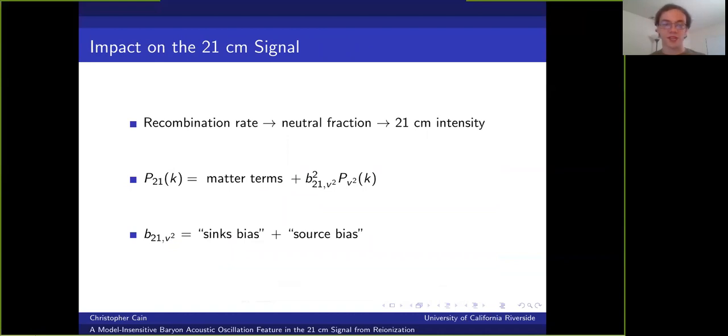On large scales it turns out that we can accurately model fluctuations in the 21 centimeter intensity during re-ionization using a linear bias expansion. And for this model we can write the 21 centimeter fluctuation power spectrum as a sum of terms sourced by matter density fluctuations, plus a term proportional to the stream velocity power spectrum. And the coefficient of this last term is a bias factor that quantifies the strength of the coupling between the stream velocity and the 21 centimeter signal. And this can be separated into two contributions.